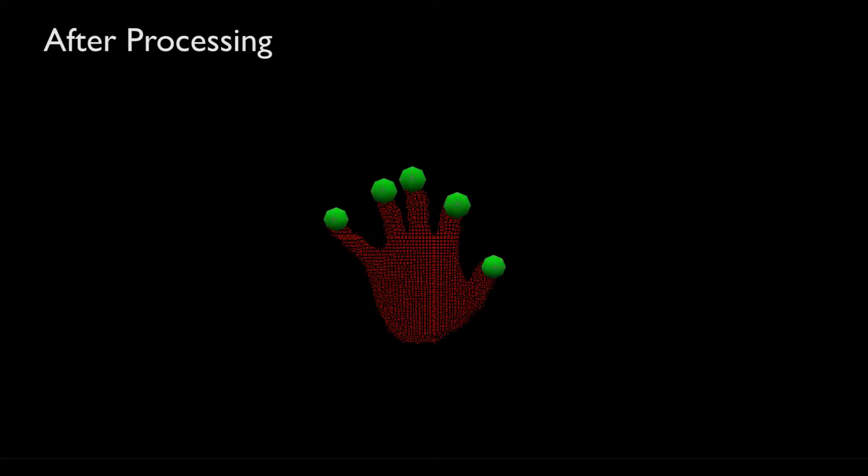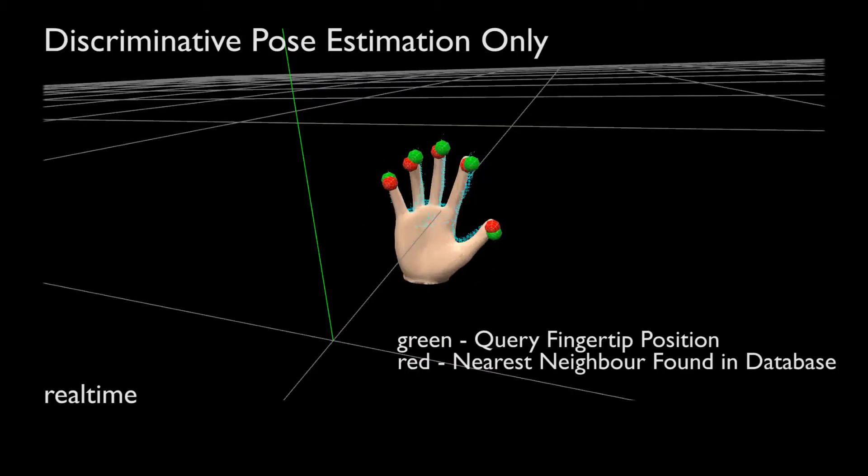Using the detected fingertips and the database of finger poses, we estimate the complete or partial pose of the hand. In this real-time sequence, we show results of discriminative pose estimation only. Please see the paper for more details on how we combined the candidate poses from the generative and discriminative methods to obtain the final hand pose.